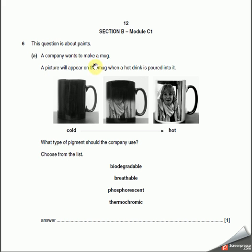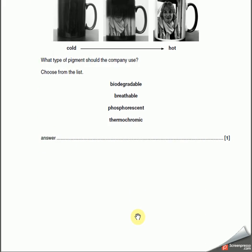This question is about paints. A company wants to make a mug where a picture will appear when a hot drink is poured into it. You can see that's cold and that is hot. What type of pigment should the company use? What kind of pigment would change color with temperature from hot to cold? It's obviously thermochromic. Remember the word thermo means temperature or heat, and chromic means color. So the answer is thermochromic.